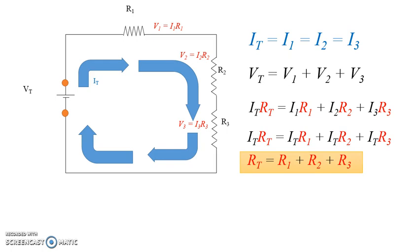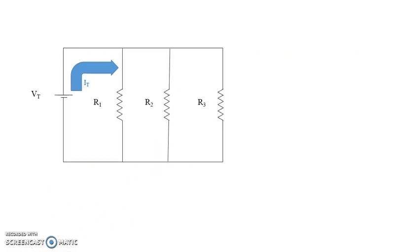In a series circuit, and only in a series circuit, the total resistance is the sum of the individual resistors, just as it should be. 100 ohms plus 200 ohms plus 300 ohms equals 600 ohms of total resistance. Now, in a parallel circuit, things are completely different.